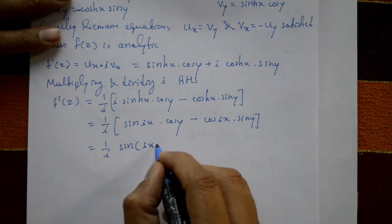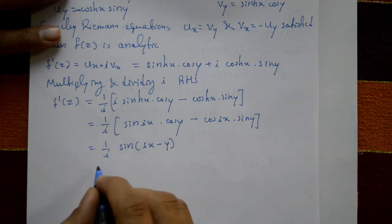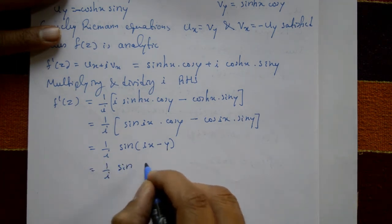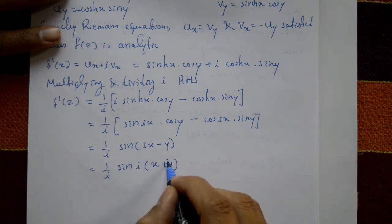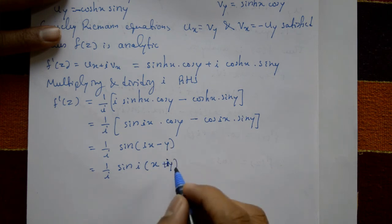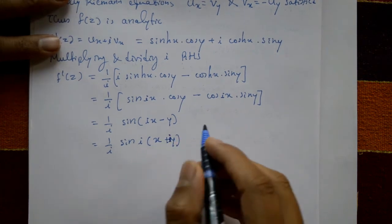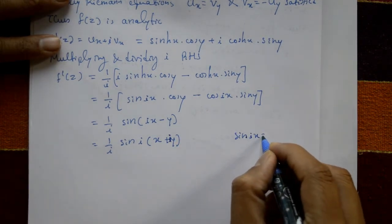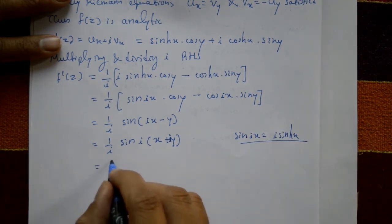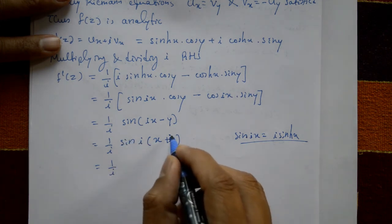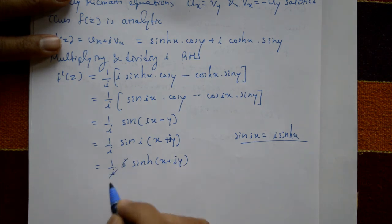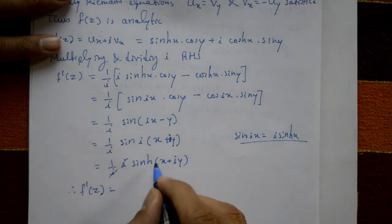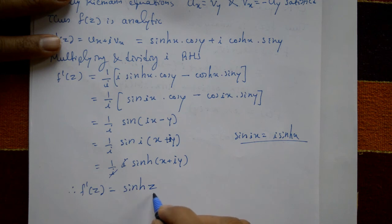Applying the sin(a - b) formula: sin(a)cos(b) - cos(a)sin(b) = sin(a - b), with a = ix and b = y, we get (1/i)·sin(ix - y). Taking i outside: sin(i(x + iy)) = i·sinh(x + iy). The (1/i)·i cancels, giving f'(z) = sinh(x + iy) = sinh(z). This is the required solution.